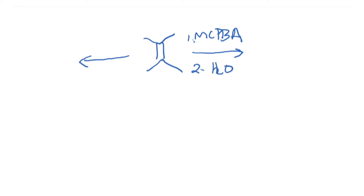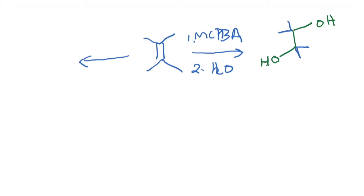The epoxide, once it undergoes hydrolysis, is going to give you the anti-alcohol — you get OH and OH on opposite faces. This is a very good way to make anti-alcohols.